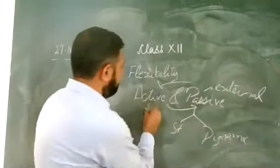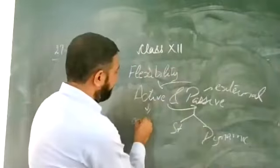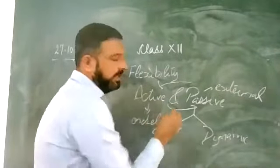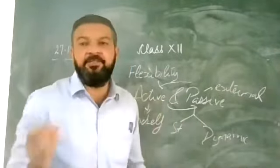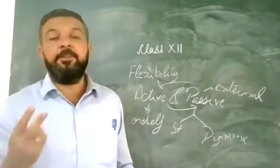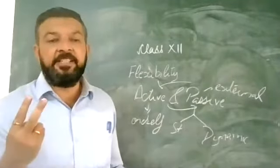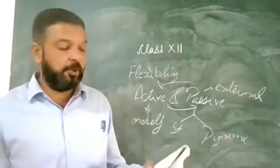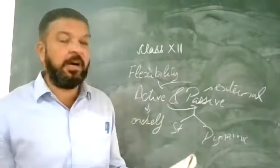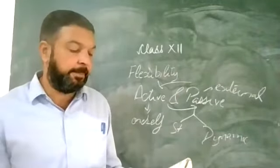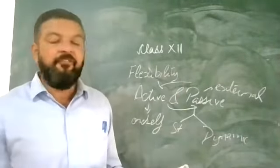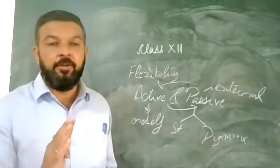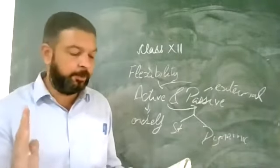Active flexibility is performed by oneself only, without the help of anyone. There are two types of active flexibility. One is static — it is the ability to perform a movement with large amplitude while remaining in a static or constant position.